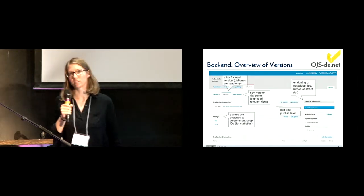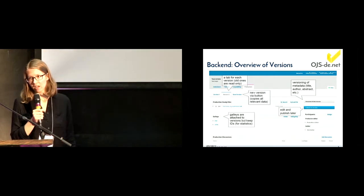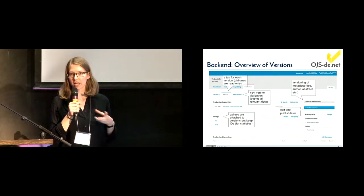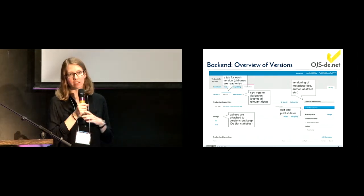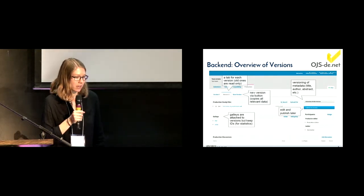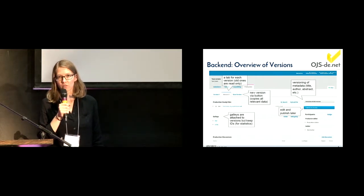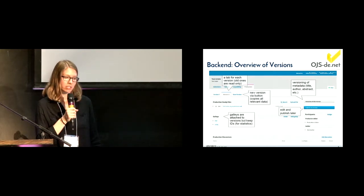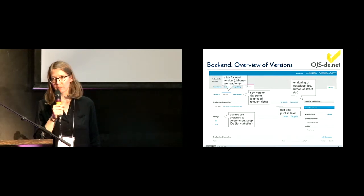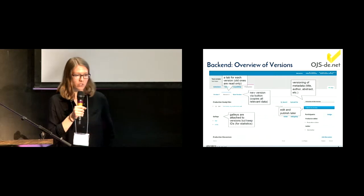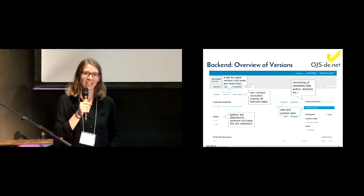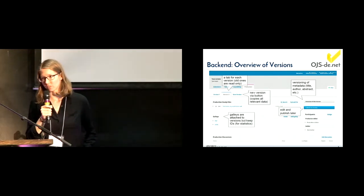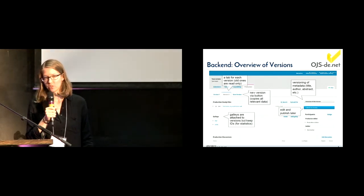Let's have a look at the result. This is what it looks like in the back end. This is the workflow stage — the last one, production. You can see a tab for each version, and the metadata and files are displayed in the tab according to the version selected. You can create new versions very easily by clicking a button, which automatically copies all the data you need and you can edit it. When you're done editing the new version, you can publish it.